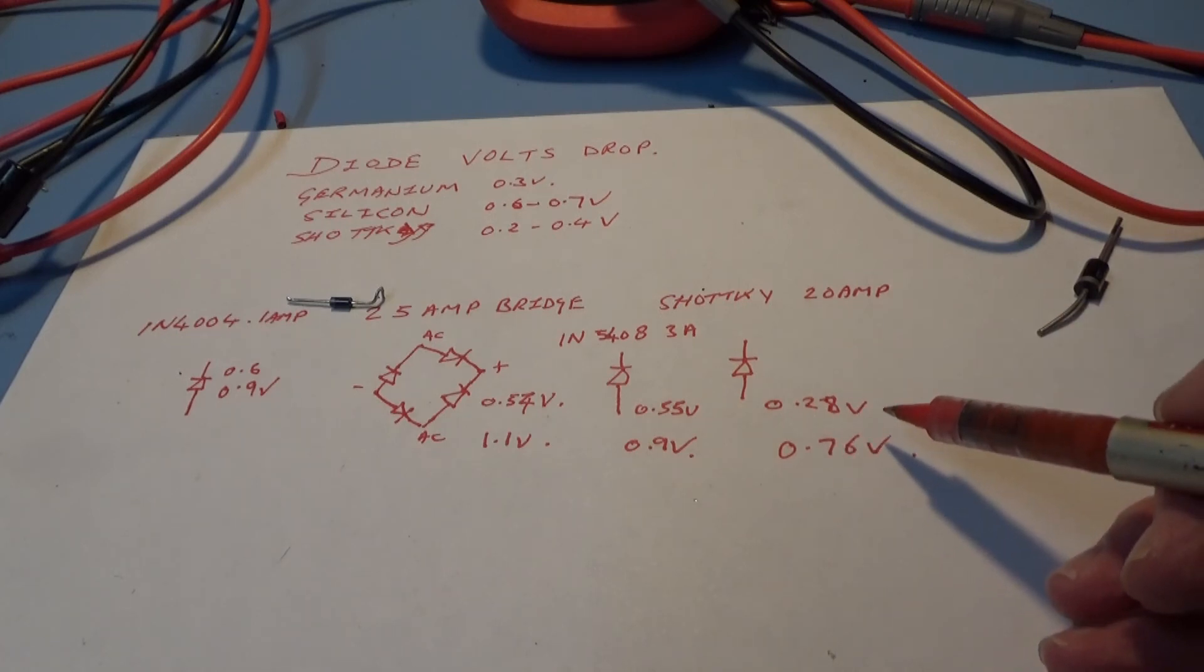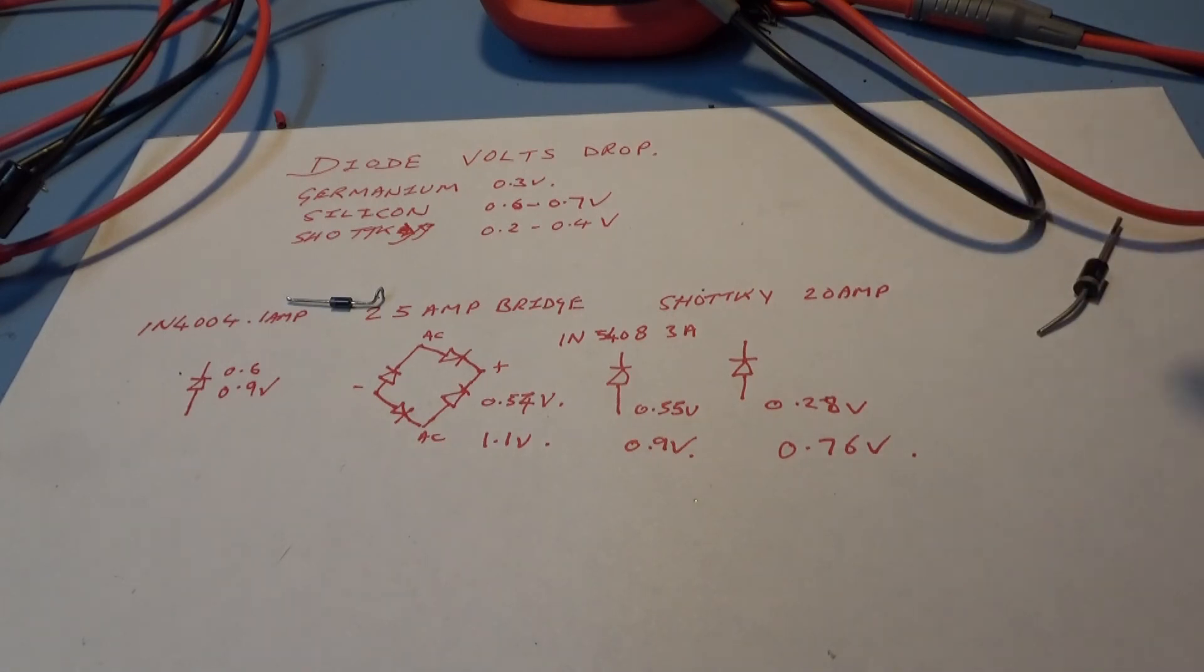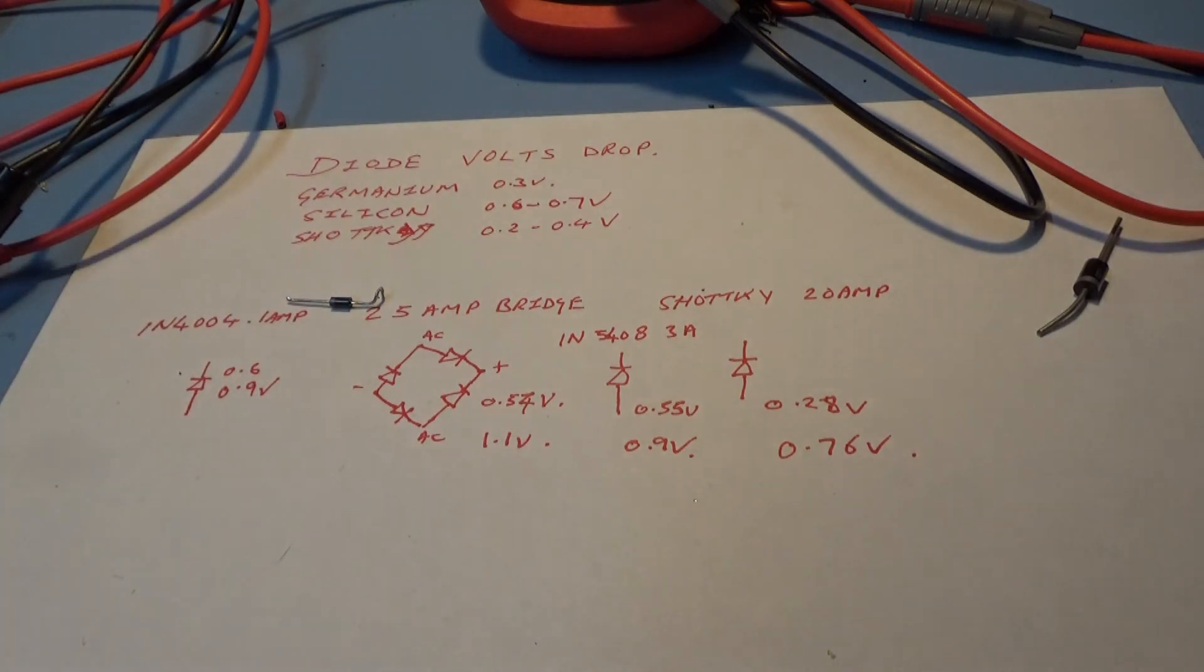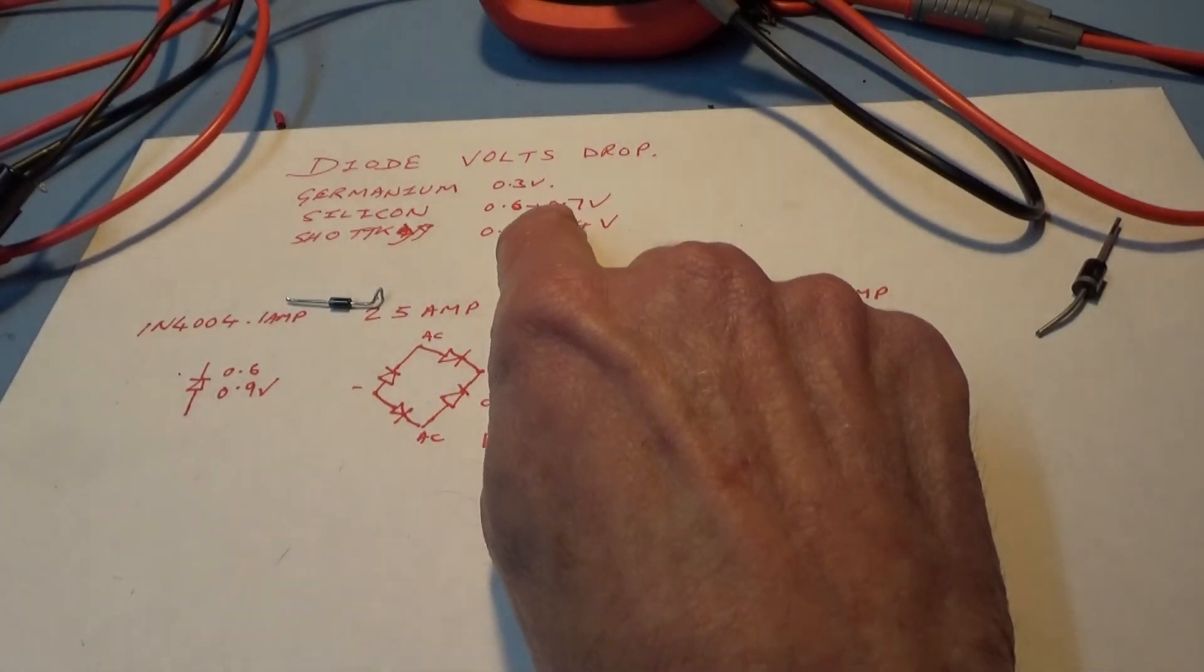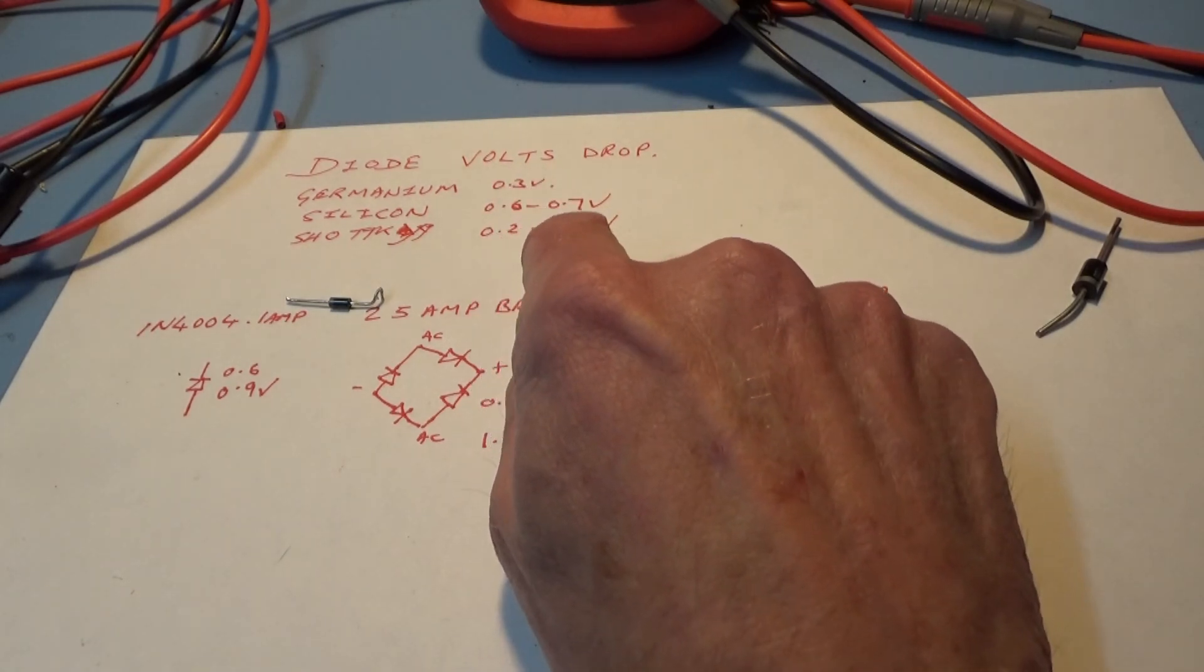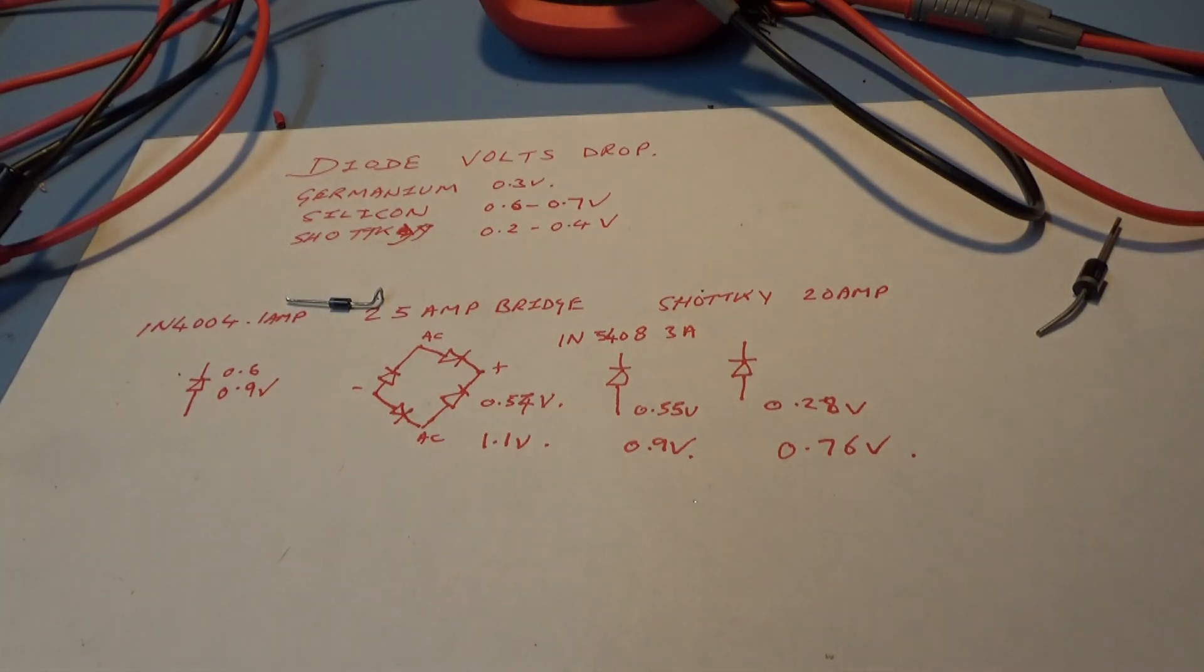This is all stuff you have to think about when you're designing power supplies because the more voltage drop you get, the more power you're wasting and the hotter the diode is going to get. It does annoy me slightly when people talk about typical voltage drops for silicon diodes because you need to test them at a certain low current before you can say what the voltage drop's gonna be. Anyway that's enough of that, bye for now.